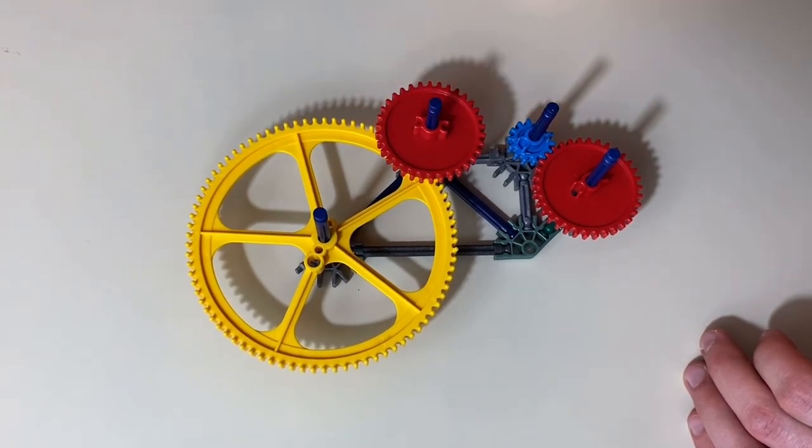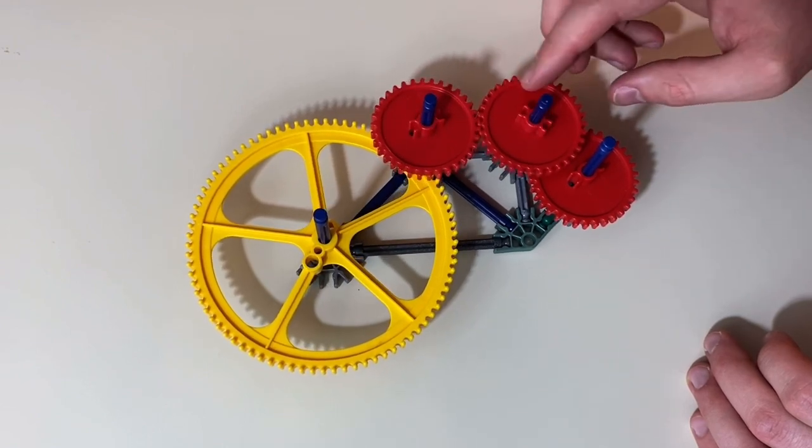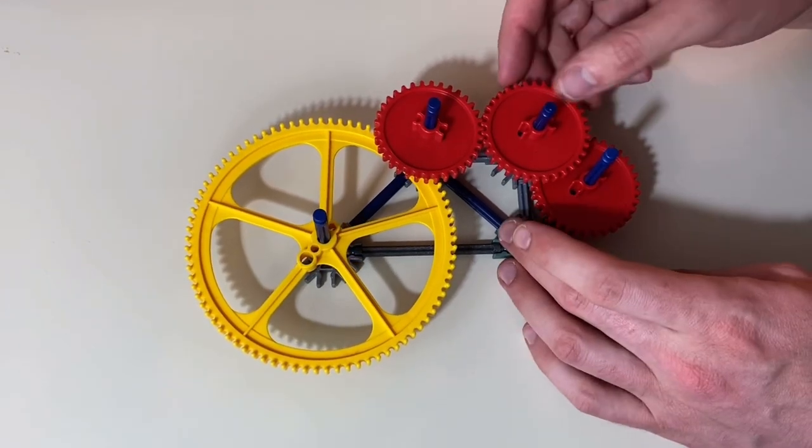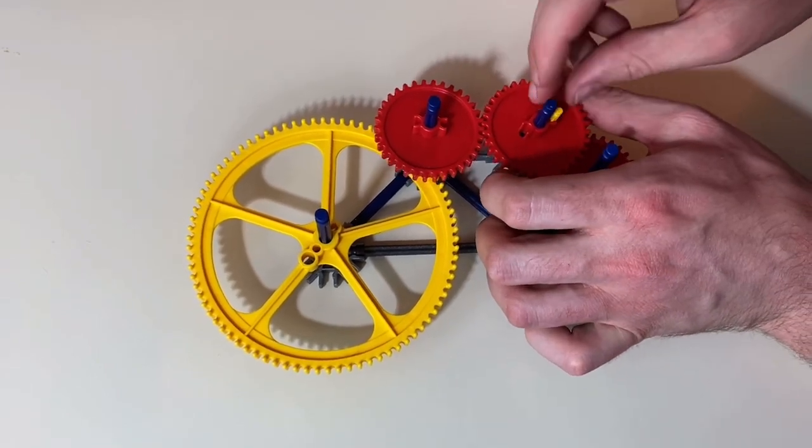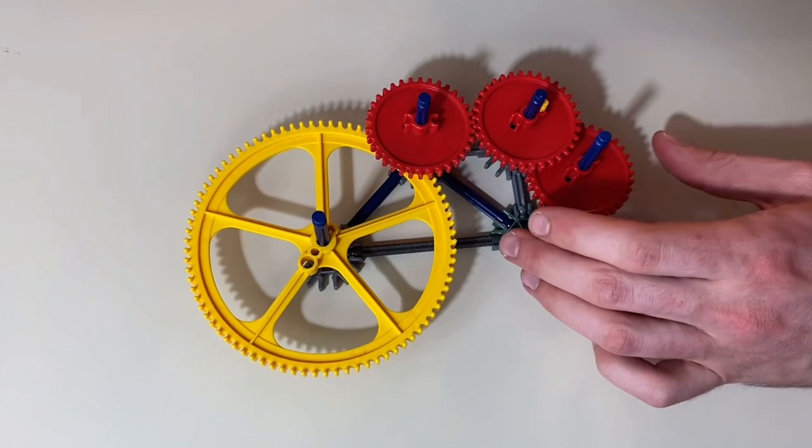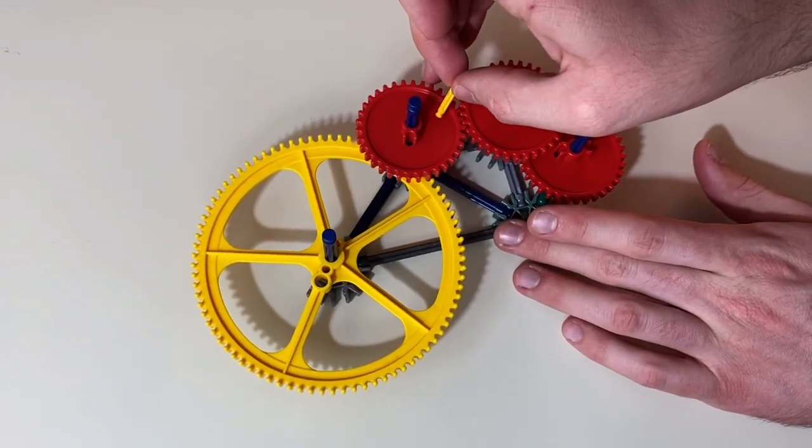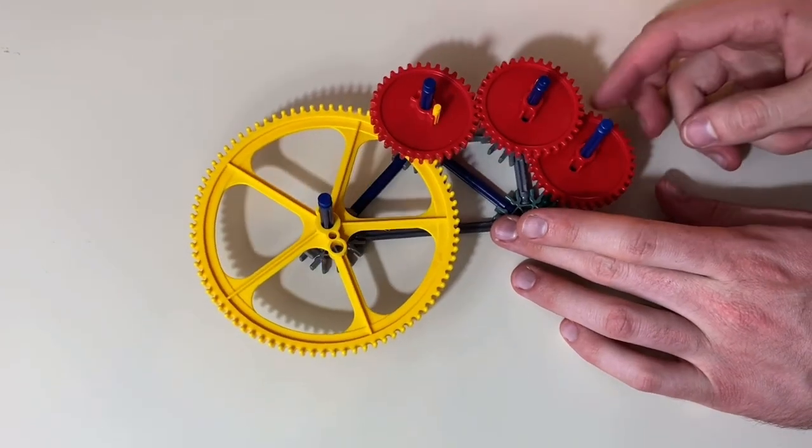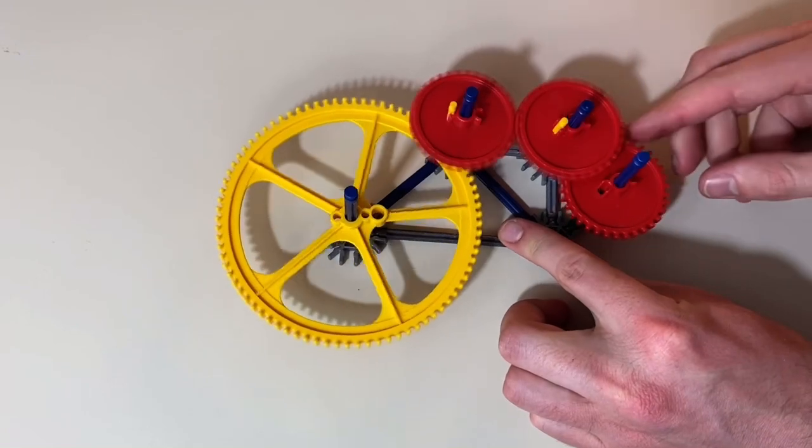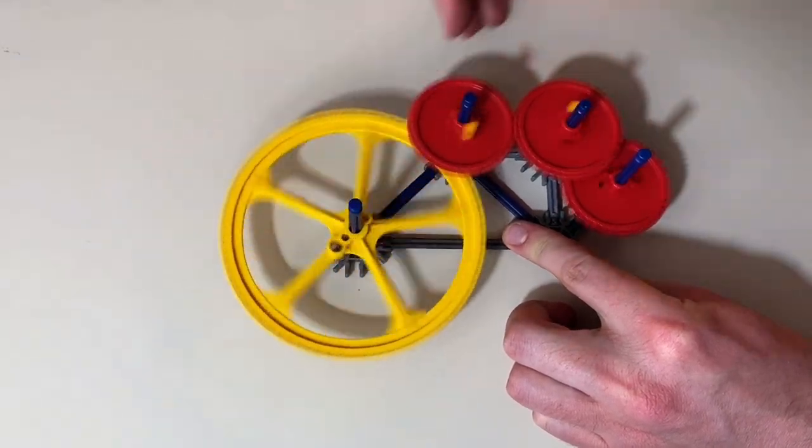So if I place this on top here, you can see that that turns at a one-to-one ratio. And if I lock these in with these micro-connects here, right about here, then you can see that you can combine gears to do different ratios, which is fun.